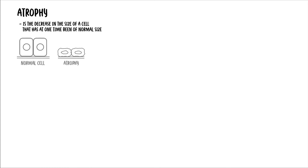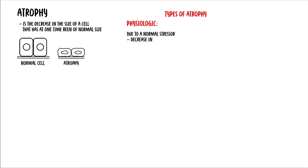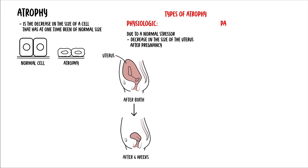The third type of cellular adaptation is atrophy, which is the decrease in the size of a cell that has at one time been a normal size. Physiologic atrophy occurs due to a normal stressor — for example, the decrease in the size of the uterus after pregnancy. Pathologic atrophy occurs due to an abnormal stressor; in general, atrophy is due to the loss of the stimulus to that organ.